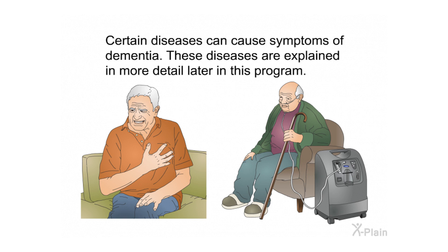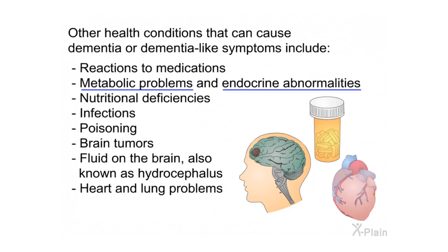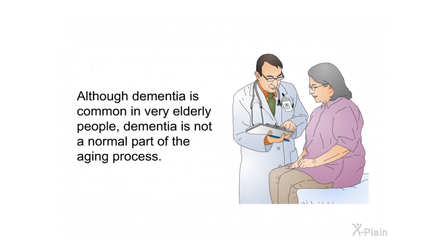People with dementia may experience personality changes and problems with their behavior, such as agitation, delusions, and hallucinations. Certain diseases can cause symptoms of dementia. Other health conditions that can cause dementia or dementia-like symptoms include reactions to medications, metabolic problems, endocrine abnormalities, nutritional deficiencies, infections, poisoning, brain tumors, hydrocephalus, and heart and lung problems. Although dementia is common in very elderly people, it is not a normal part of the aging process.